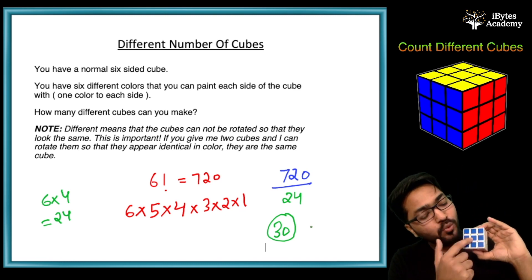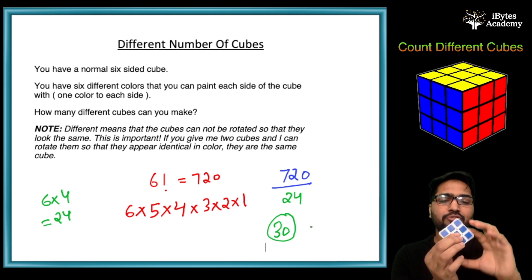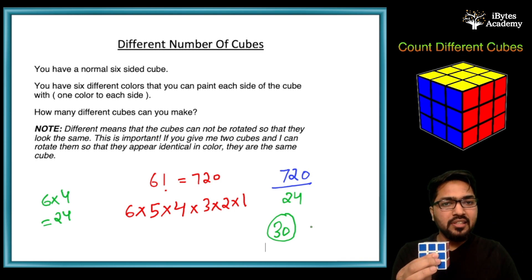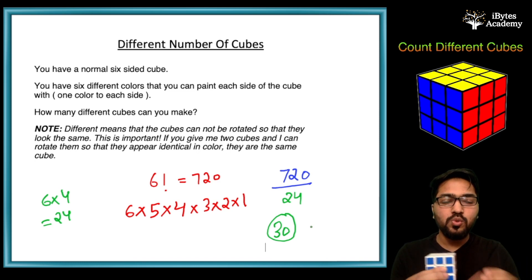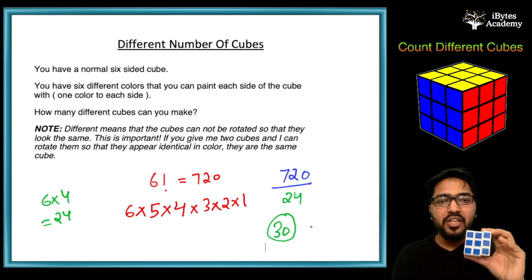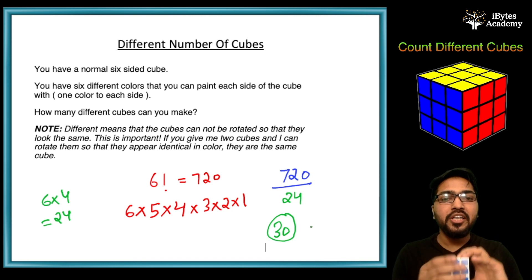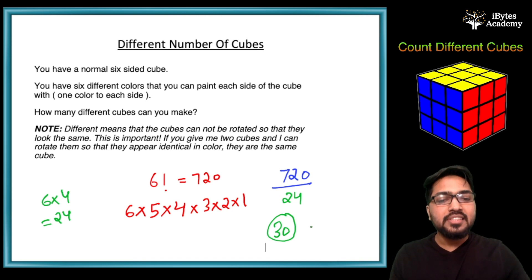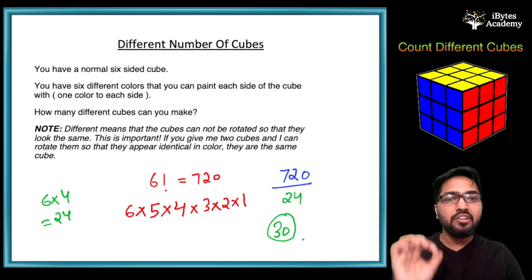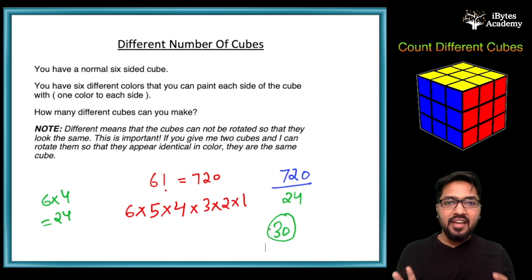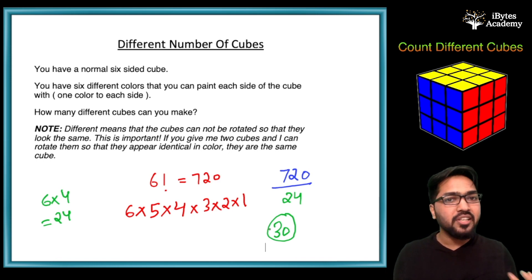If I take the blue face on top, I have four ways of rotating it. Similarly, I have 6 faces, so 6 into 4 is 24. I can show you the same cube in 24 different orientations. So 720 divided by 24 is 30 — there are 30 different cubes that can be made. I hope this problem is clear and I will see you in the next video with another interesting puzzle.